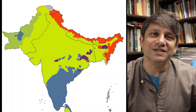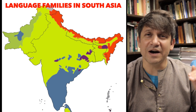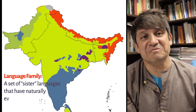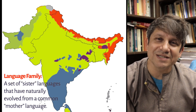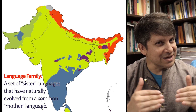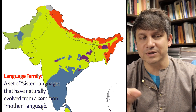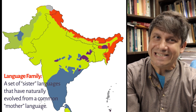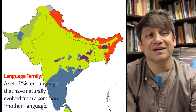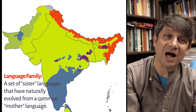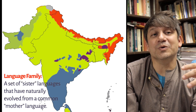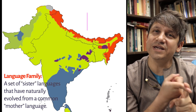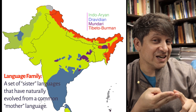When we look at the hundreds of languages of South Asia, the first thing to notice is that they can be divided into four distinct language families. A language family is a set of sister languages genetically related to one another — they've naturally evolved from the same parent, or mother, language. In South Asia there are four of these families. Note that we say 'South Asia' rather than 'India' because languages don't respect political boundaries, and many are found in Pakistan, Nepal, and Bangladesh. The four families are: Indo-Aryan, Dravidian, Mundari (or Austro-Asiatic), and Tibeto-Burman.